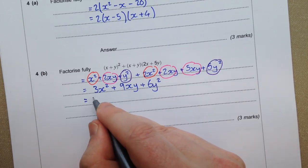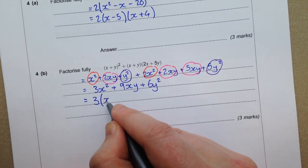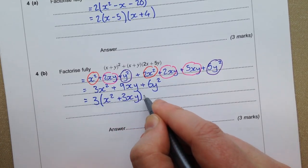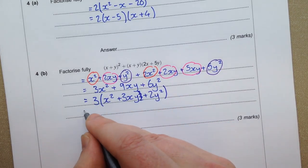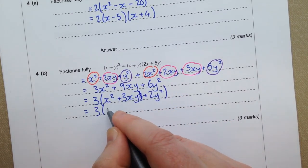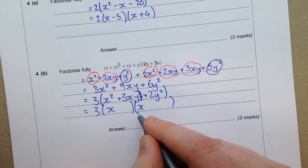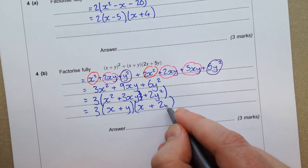So if we take 3 out as a factor, we're going to have 3 lots of x squared plus 3xy plus 2y squared. So factorising, that's going to be x plus y and x plus 2y.